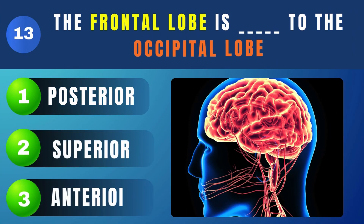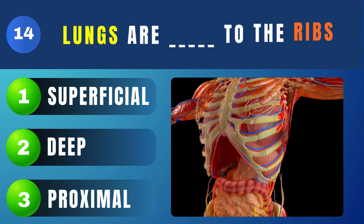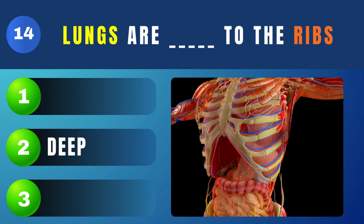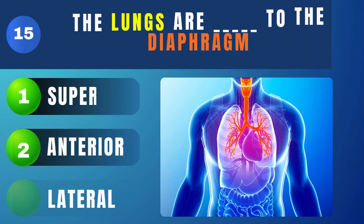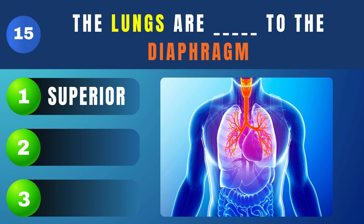The frontal lobe is what to the occipital lobe? Anterior. Lungs are what to the ribs? Deep. The lungs are what to the diaphragm? Superior.